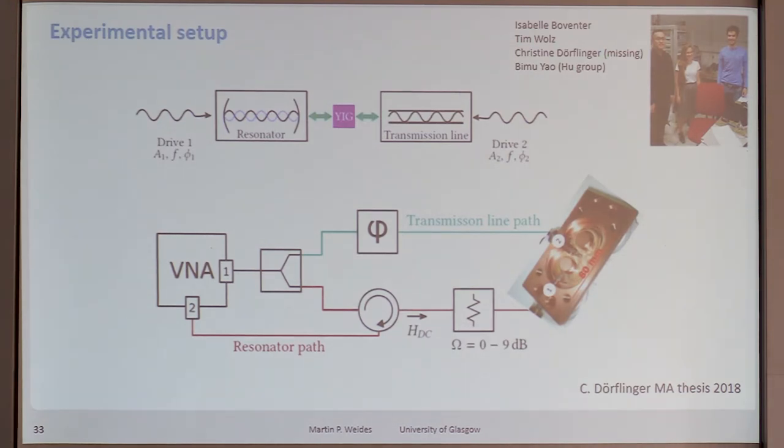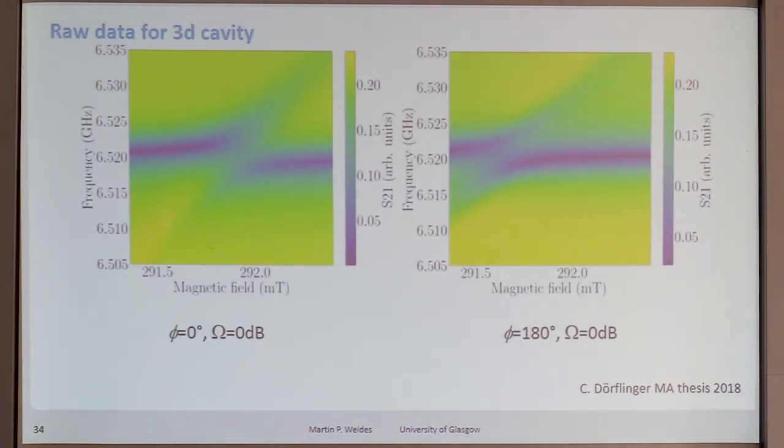Okay. So we did some measurements last week. Christine Dörflinger, who actually did that experiment and just submitted her master's thesis last week, is not on the image. But the three other students involved are shown. So this is Isabelle Boventer, it's Tim Wolz, and Bimo Yao as well, who was visiting us last week. I think all three of them are at the conference here. This is the raw data for the 3D cavity, sending two tones, but having no phase difference. And if you compare both data, this has a phase difference of pi, there's not a big difference. Only the resonance point is shifting a bit, which we attribute to crosstalk. There's still a bit of crosstalk happening. However, both drives have the same amplitude. So the one to the cavity and to the YIG.